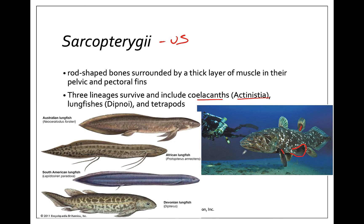There are only two species of coelacanths. They were thought to be extinct 75 million years ago, but in 1938 a fisherman off the coast of South Africa actually pulled one up. He had quite a time trying to figure out what it was, until we realized these things are still alive in the ocean. There are actually two living species.